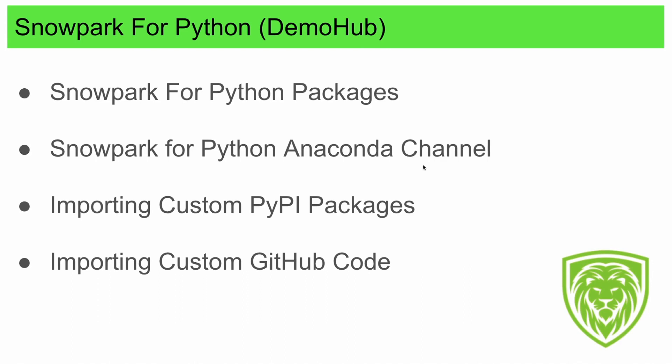I'll leave some resources in the description below on how to automate this. There are great articles on Medium where instead of manually getting things from Git and zipping them, you can set up a CI/CD workflow — commit your changes, kick off a process to build the packages, grab the zip files, and put them into a Snowflake stage automatically.